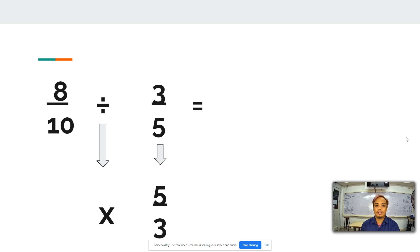what we will do is we will change this to a multiplication process. And then we will use the dividend. So we have 8 over 10 times 5 over 3.